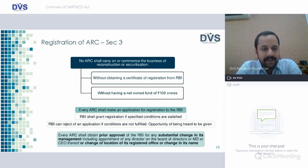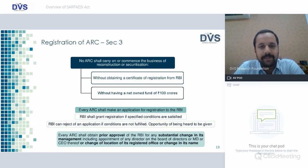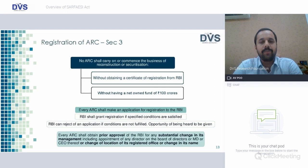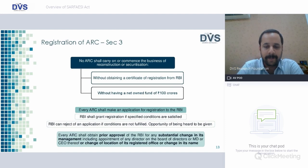RBI can reject an application if conditions are not fulfilled, with opportunity of being heard to be given. Every ARC shall obtain prior approval of RBI for any substantial change in its management, including appointment of any director on the board of directors or MD or CEO thereof, or change of location of its registered office or change in the memorandum of association.